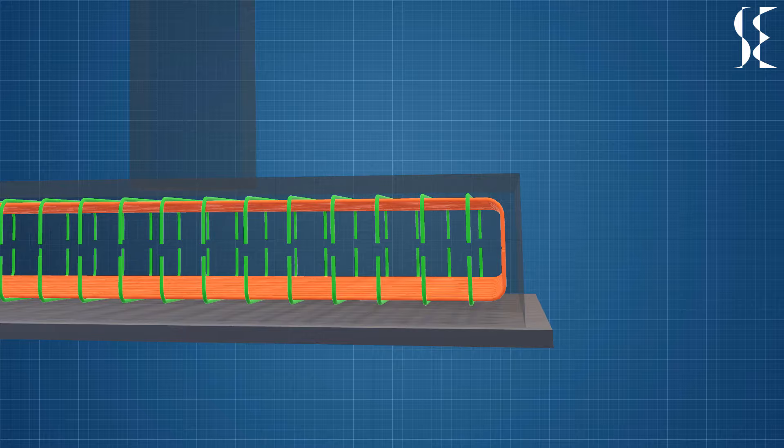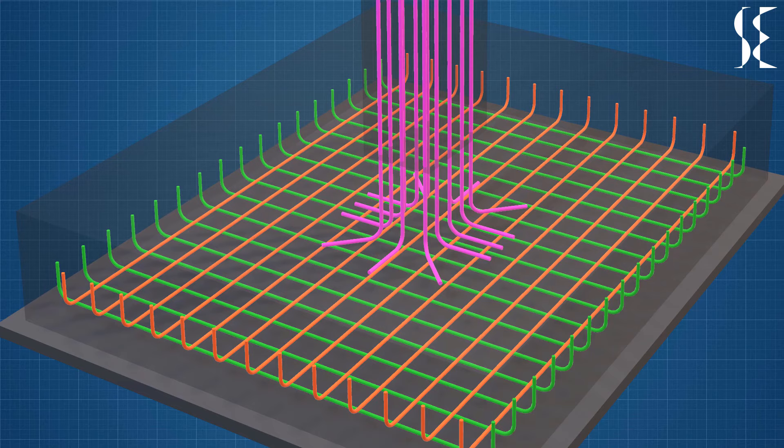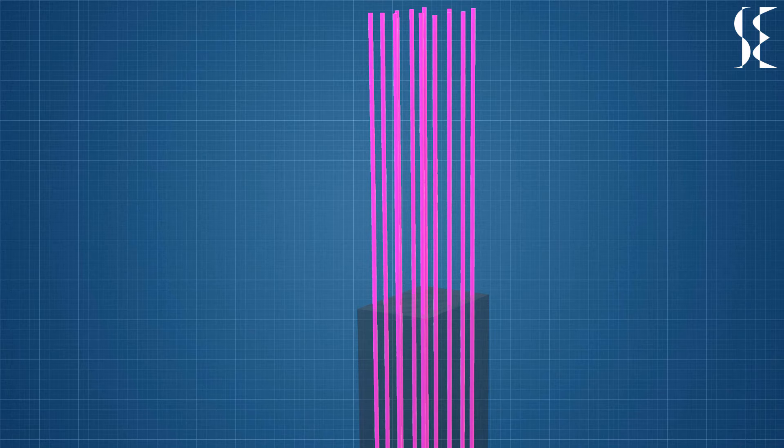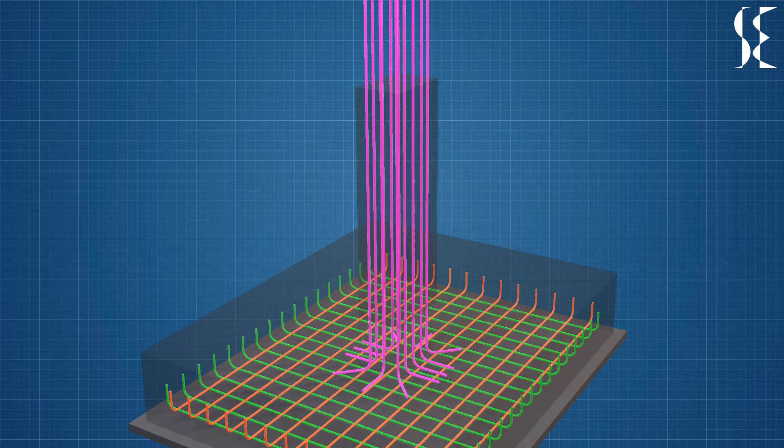Now let's talk about the column reinforcements which are embedded in the footing. The column longitudinal rebar starts with a 90 degree hook in the footings for better anchorage with concrete. They are extended above the footings for sufficient lap length with main column reinforcement.